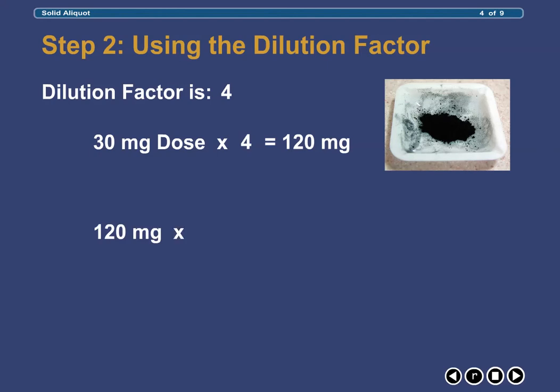We then multiply the least weighable quantity of 120 mg by the dilution factor of 4. Performing the second calculation, we determine that the total weight of the aliquot that we need to prepare is 480 mg.